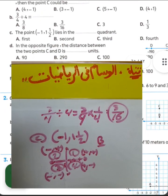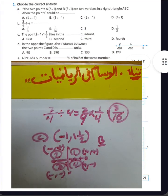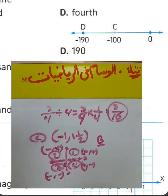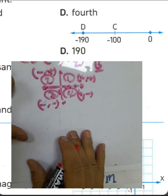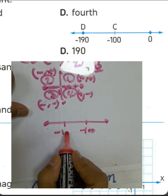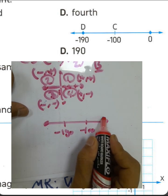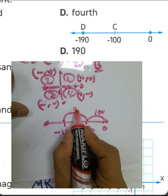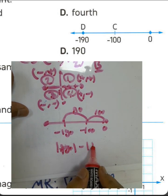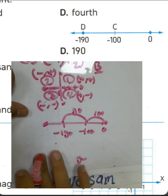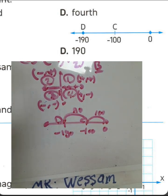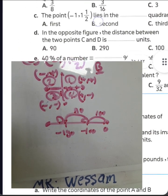Question letter D: in the opposite figure, the distance between two points C and D equals what? We have negative 100 here and negative 190 here, and zero. The distance is 90 — the difference between negative 190 and negative 100. The distance between point D and point C is 90 units. Choose letter A.